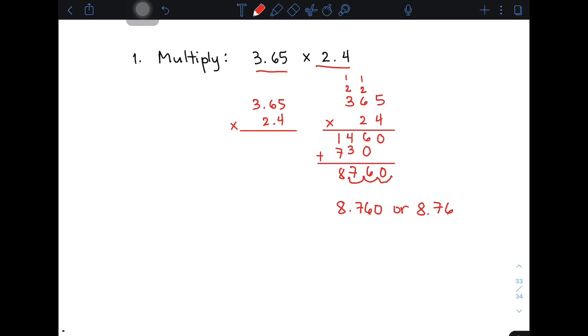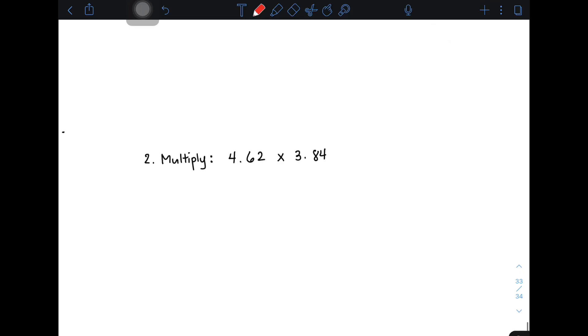To help you master the steps on how to multiply decimals, I will show you another example. Copy your decimals vertically: 4.62 times 3.84. Imagine that you don't have any decimal, like 462 times 384. Multiply it as a whole number.